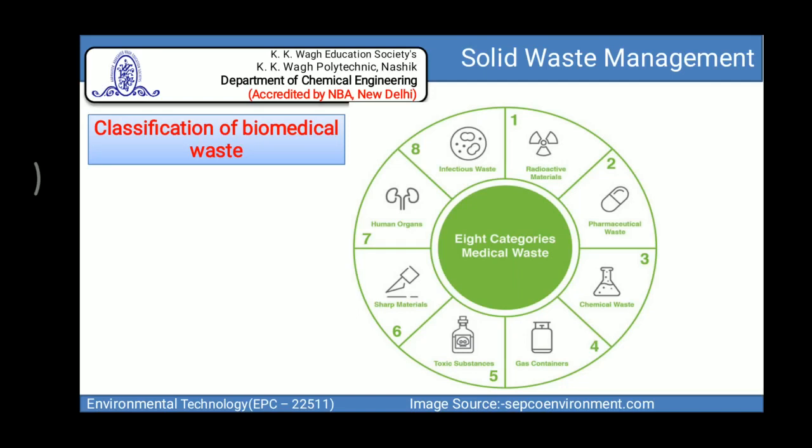The seventh category is human organs — after operations in hospital, human body parts, body fluids, or human tissues are removed. During post-mortems, body parts are also removed, so this waste comes under this category. The eighth is infectious waste — contaminated waste with blood, excretions, or secretions from infectious diseases. Animal waste, such as decayed animal carcasses, body parts, or body fluids produced during research activity, also falls under the classification of biomedical waste.